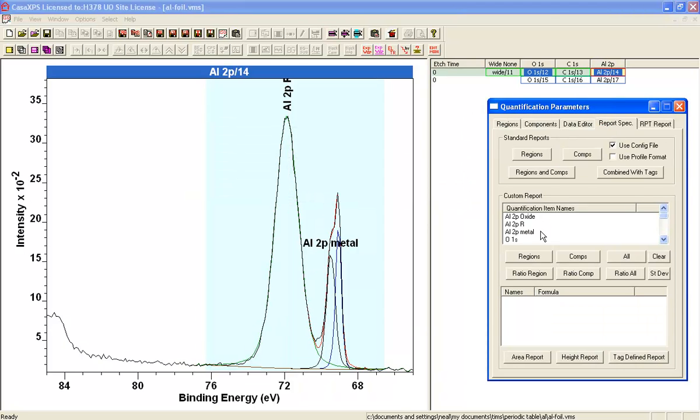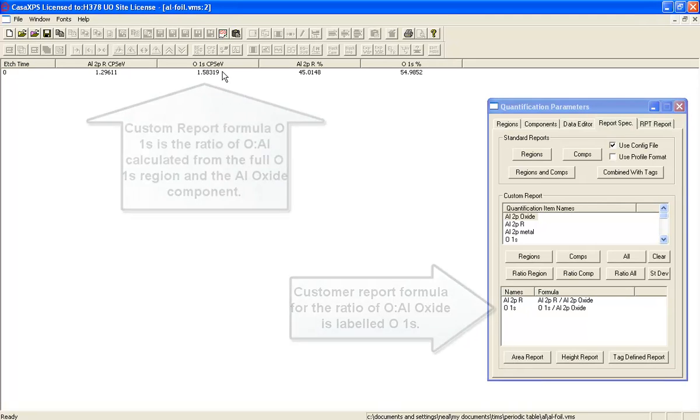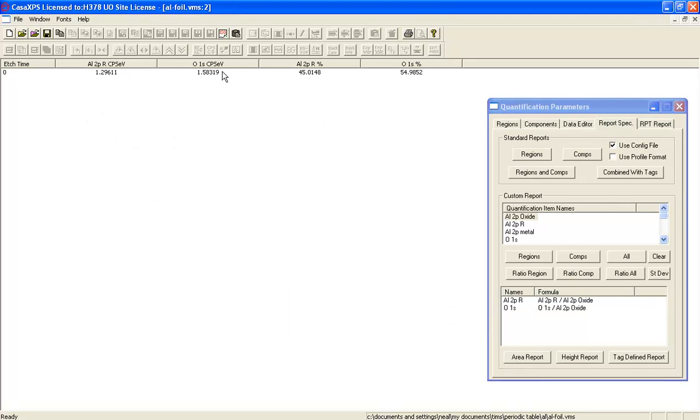and I go to the report spec, I can then look at the ratio of oxygen to the aluminum oxide and use the custom report to do this. And now we see that the ratio is 1.58, so we're getting closer to what we would expect compared to what we had before.